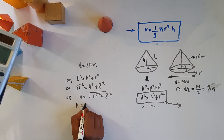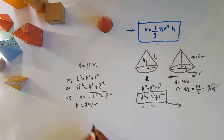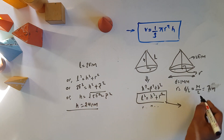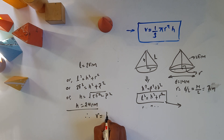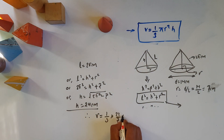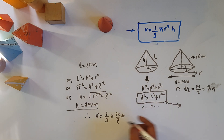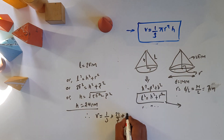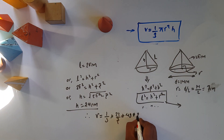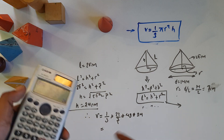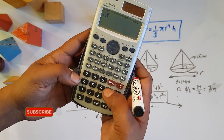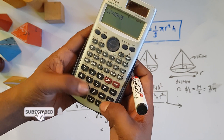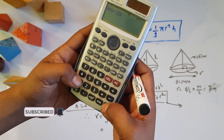The height is 24 cm. Therefore, the volume V equals 1 by 3 into 22 by 7 into 49 into 24, which equals 22 into 49 into 24 divided by 21.